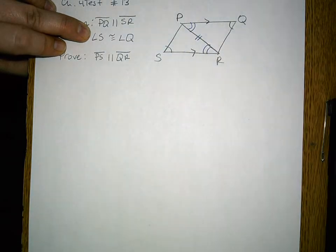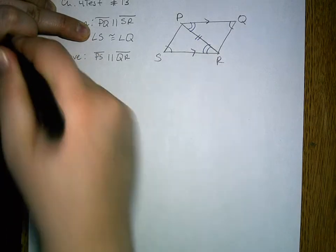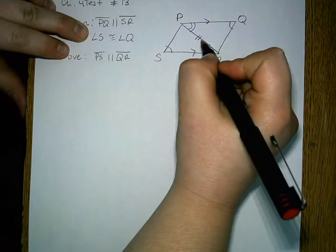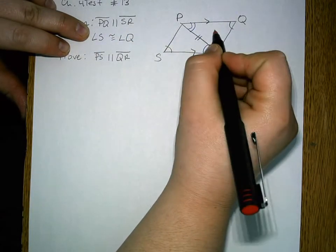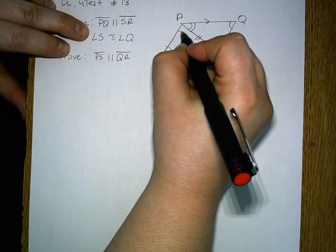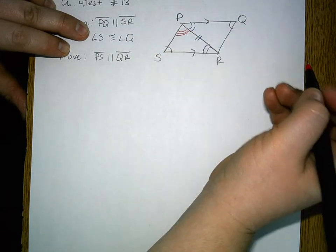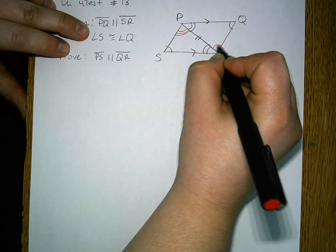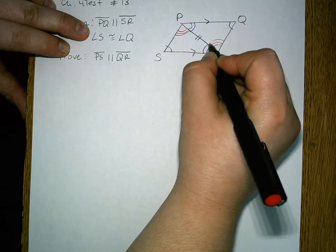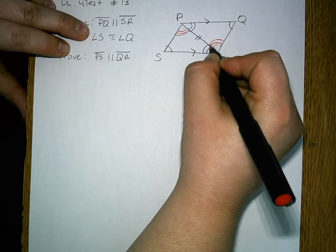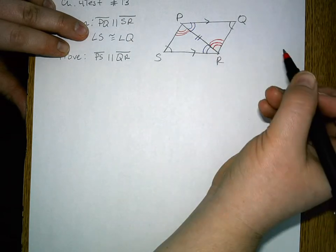And then further after that, in a different color, after we prove the two triangles congruent, we can prove that angle SPR is congruent to angle PRQ by the CPCTC,